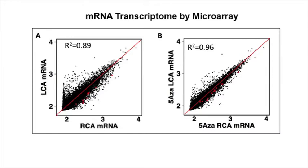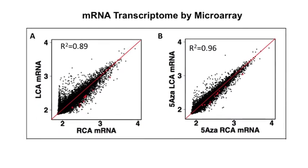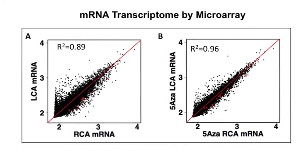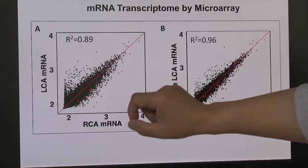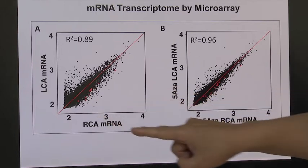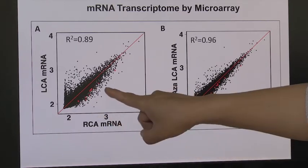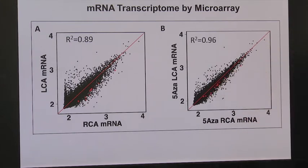These data suggest that 5A, by inhibiting DNMT, can significantly reduce atherosclerosis. To understand how 5A inhibits atherosclerosis, we took two different approaches to understand the mechanisms. The first was microRNA analysis to understand genome-wide mRNA expression patterns. As expected, flow disturbance induces many gene expression changes, which can be reverted back toward a normal state by treating animals with 5A.